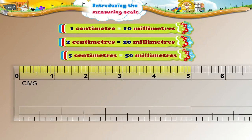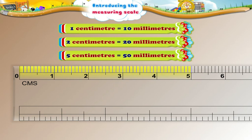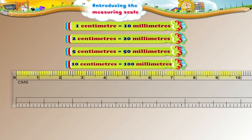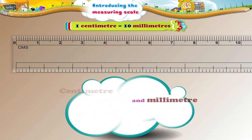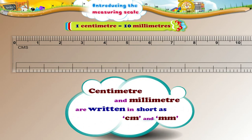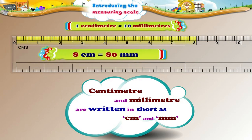In the same manner, 5 centimeters will be equal to 50 millimeters, and 10 centimeters will be equal to 100 millimeters. Centimeter and millimeter are written in short as CM and MM. So we can say that 8 centimeters is equal to 80 millimeters.